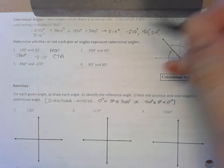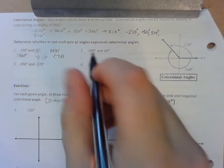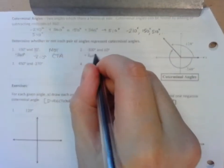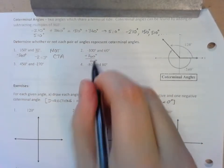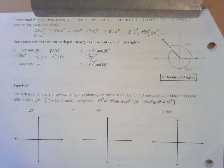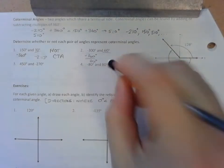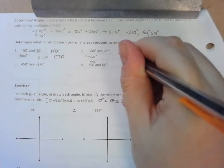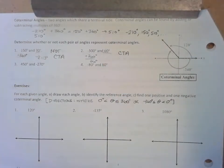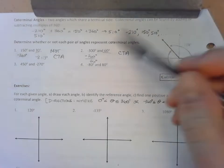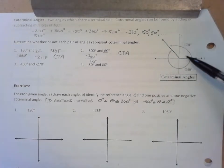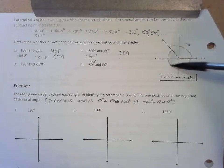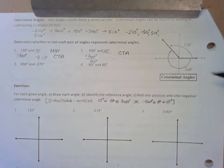For question 2, let's add 360 to negative 300. That gives me 60 degrees. We have a match! So I know for sure that number 2 are coterminal angles, because adding 360 would end up with the terminal side in the same spot. 60 would be somewhere here and negative 300 would end up in the same spot with the same terminal side.